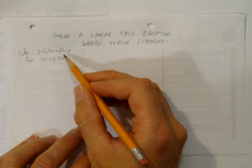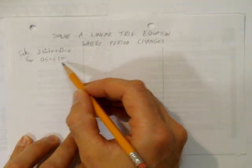In this video, we'll demonstrate how to solve a linear trig equation where the period changes. The equation we're asked to solve is 2 sine of 3x plus root 3 equals 0 when x is between 0 and 2 pi.